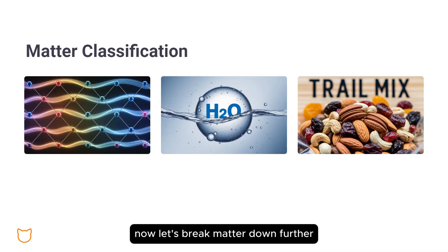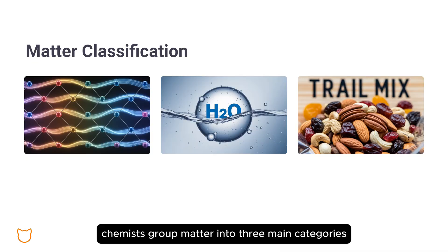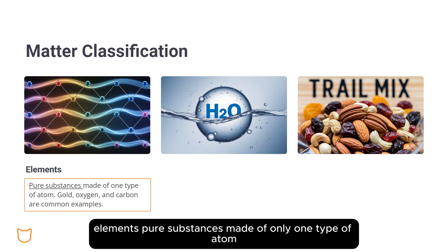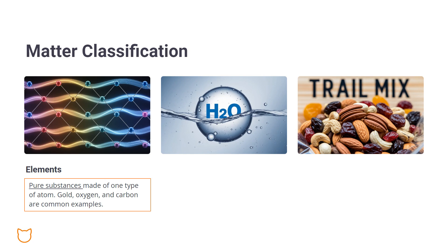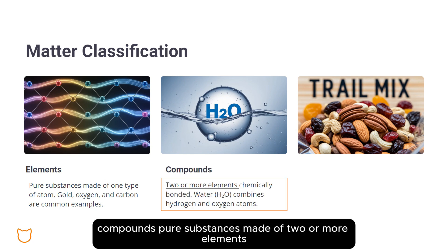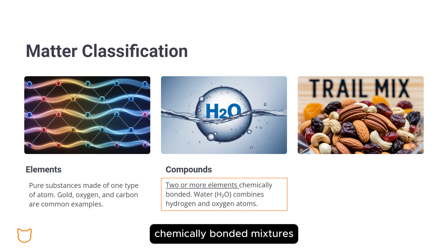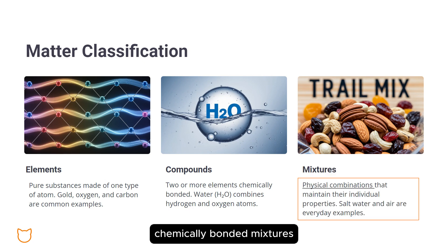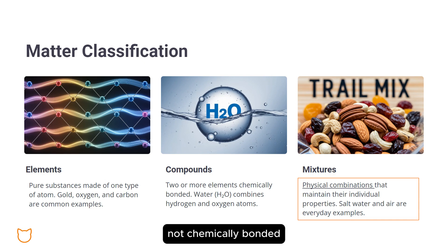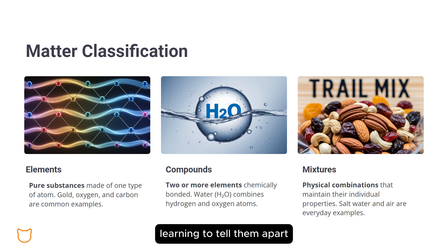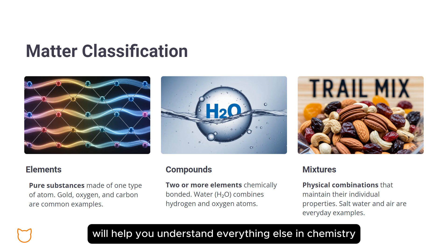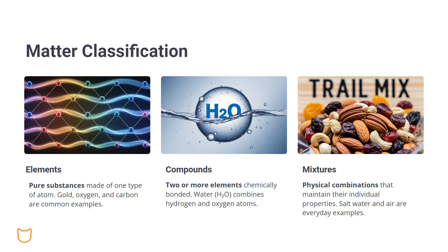Now let's break matter down further. Chemists group matter into three main categories: elements — pure substances made of only one type of atom; compounds — pure substances made of two or more elements chemically bonded; and mixtures — physical combinations of substances, not chemically bonded. Learning to tell them apart will help you understand everything else in chemistry. Trust me, if you get this, you're already ahead.